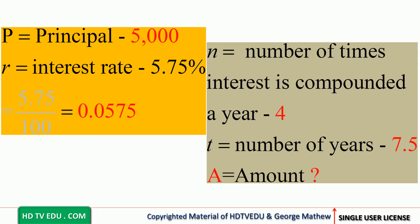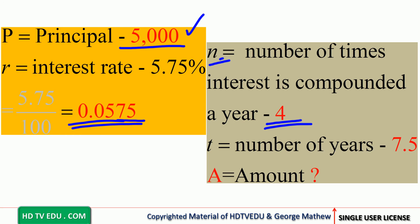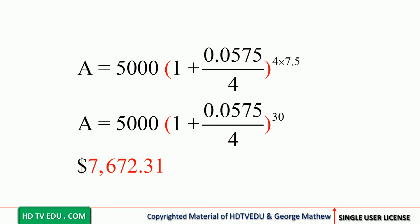The principal P is five thousand. The interest rate is five point seven five percent — convert that to a decimal by dividing by 100, giving you zero point zero five seven five. N is the number of times interest is compounded per year; we have quarterly, so n equals four. T is the number of years, which is seven point five. A is the final amount.